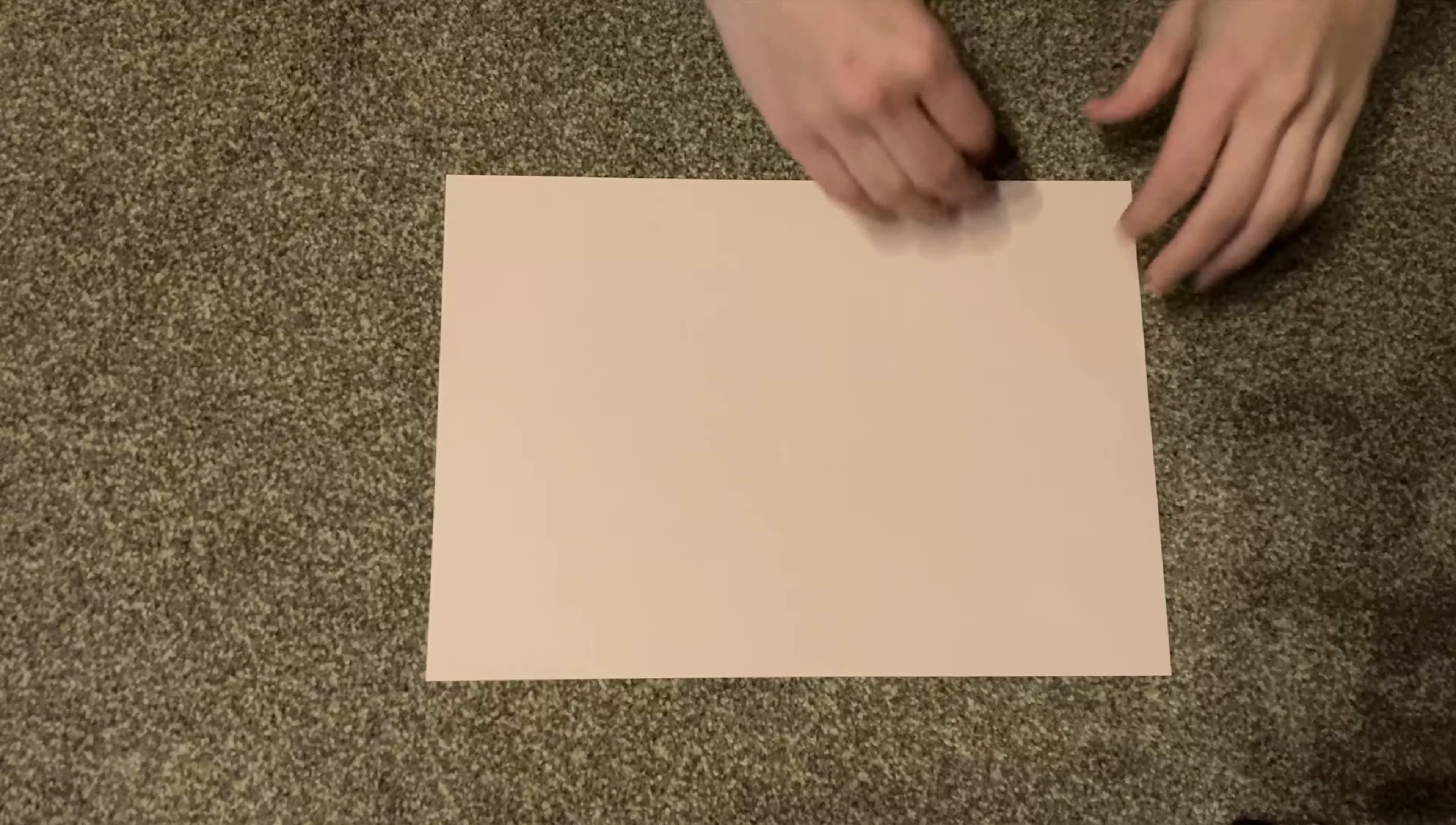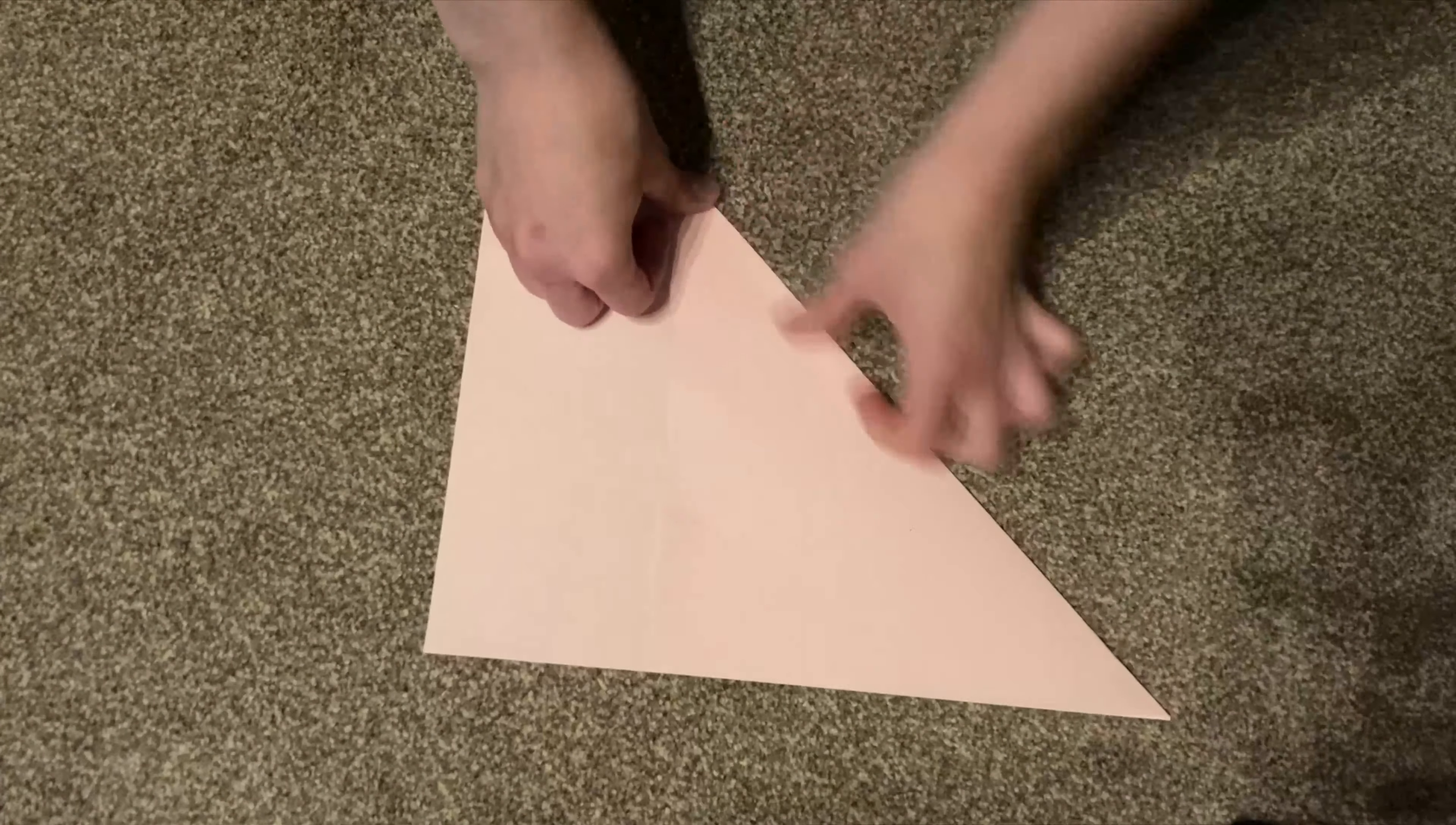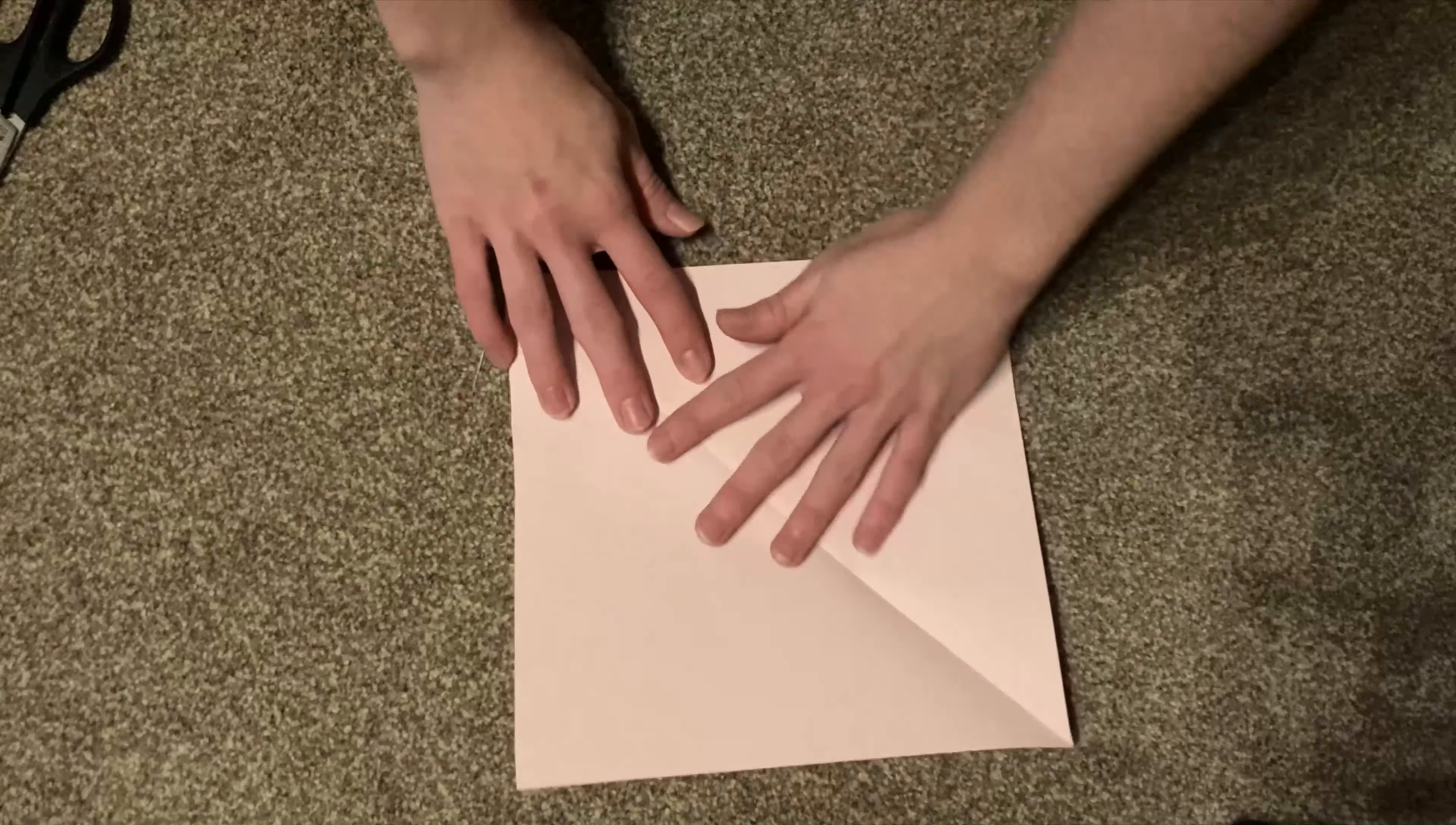You take a sheet of colored paper and fold one corner to the other side of the paper like this. Then you take your scissors and cut along the line so that you have a square in the end.